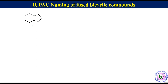We have just learned that the bigger ring is numbered first and then the smaller ring. So the numbering will be 2, 3, 4, 5, 6, 7, 8, and 9 like this. Root name: since there are nine carbon atoms in the ring and the compound is saturated, the root name will be nonane.